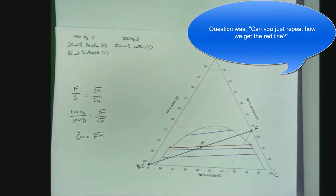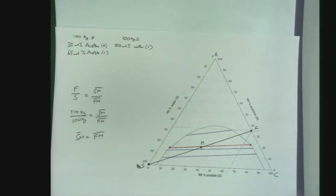Student asks: 'How'd you get the red line?' We've got our blue tie lines, and we can see our mixing point is between two of our tie lines - between this middle line and the top line. So what we do is interpolate the distance between these two lines.